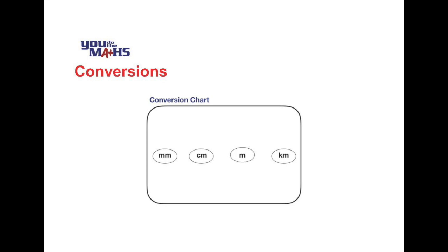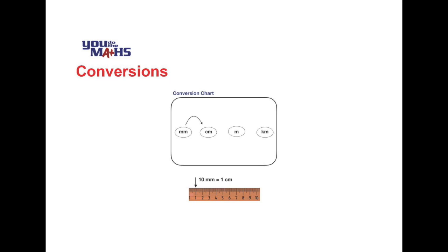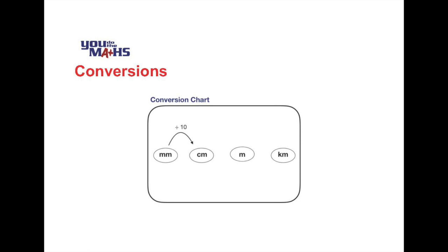Let's have a look at how this chart can help us do a conversion. First, consider millimetres to centimetres — we'll put an arrow in place to show that direction, as that's the conversion we were asked about at the start. We know from a ruler that there are 10 millimetres in one centimetre, so to convert we divide by 10. We'll show that in our chart just above the arrow.